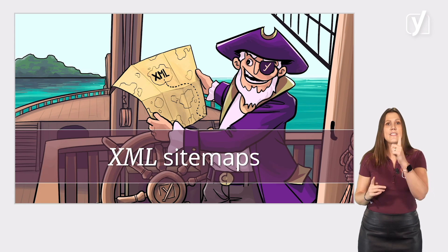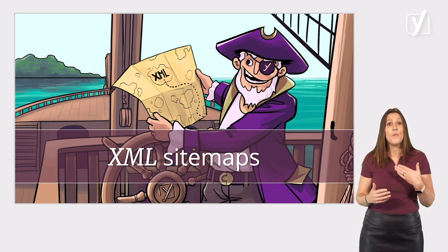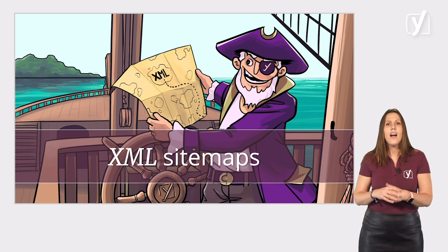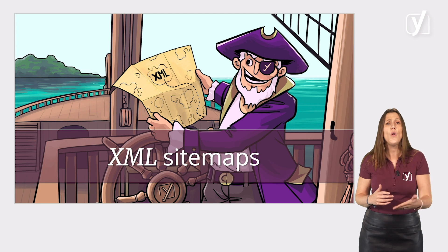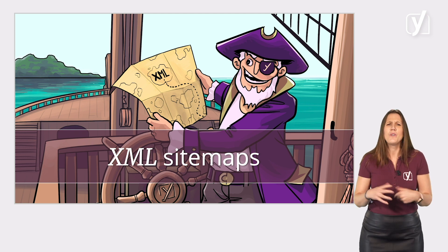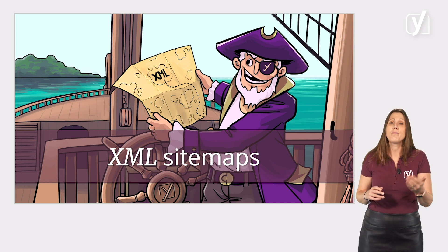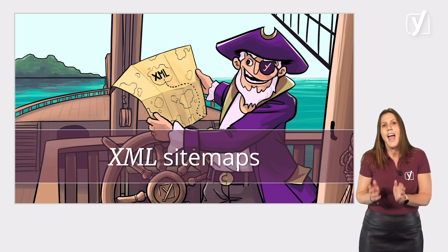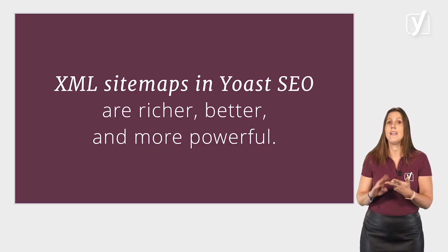So what's next? Sitemaps. Yoast SEO creates an XML sitemap for your website automatically. A good XML sitemap acts as a roadmap of your website that leads Google to all the important pages. Crawlers really like these because they make your content easier to find. WordPress also comes with built-in XML sitemaps, which is great, but while the WordPress sitemap is very basic, XML sitemaps in Yoast SEO are richer, better, and more powerful.